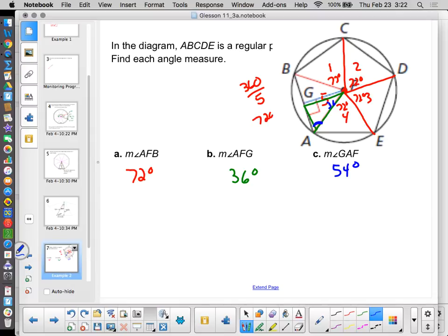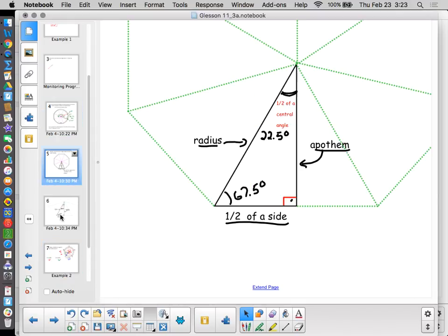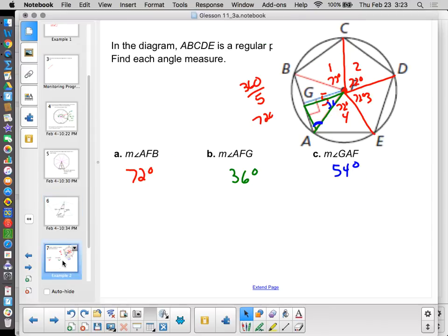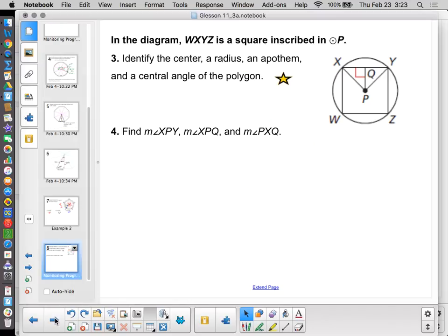So that's kind of what's going on. We've got to figure out that triangle. Now, every pentagon is going to have angles with those measures. Every regular pentagon, when I break it down, is going to have those measures. Just like every regular octagon, when I break it down, is going to have angles of 67.5, 22.5, and 90. You aren't expected to memorize them. You aren't expected to be able to figure them out. Here's kind of some fun for you. Here's a square inscribed in a circle. So it's a perfect regular quadrilateral, a square. And I'm going to want you to identify the center, radius, and apothem and find a central angle of the polygon.